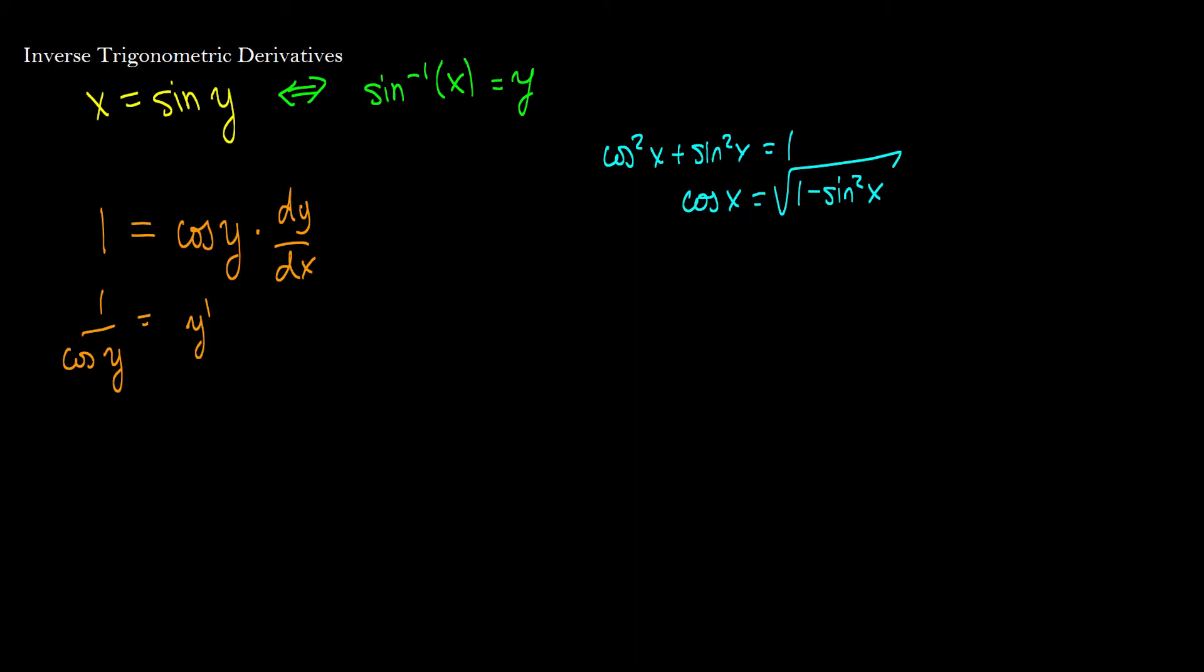But we know that, in this case, x is equal to sine y, so we're just going to make a little substitute here for simplicity. And we're going to say this as 1 minus sine squared y, and we're going to say that this is cosine y.